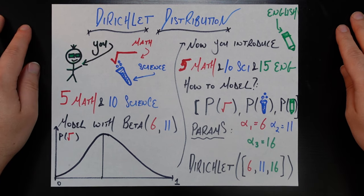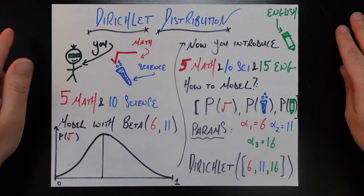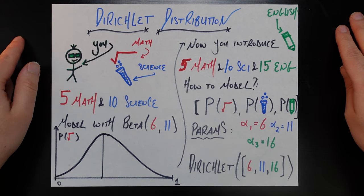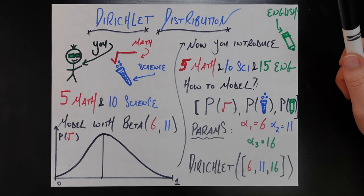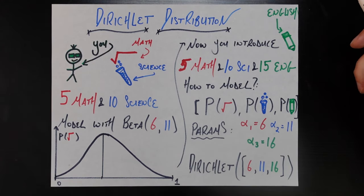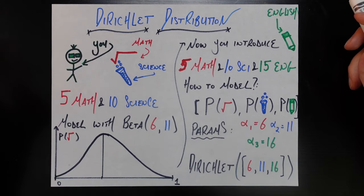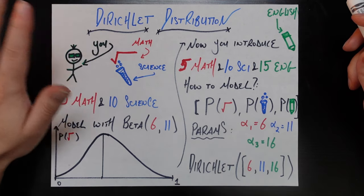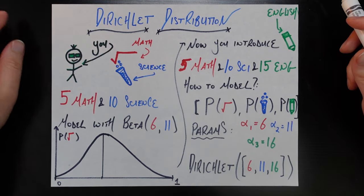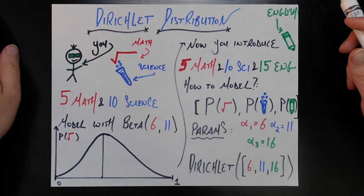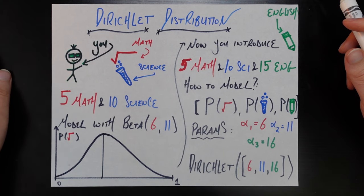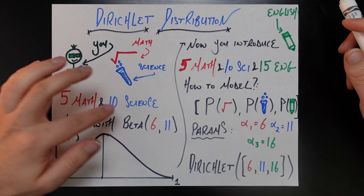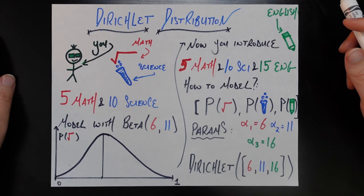Let's say that you just started a small university. Now because you just started, you're only offering two majors. You can either major in math, which we're just going to denote by the square root sign, or you can major in science, denoted by this test tube. Now you only have a couple of students so far — there's five students enrolled in the math major and there's ten students enrolled in the science major.